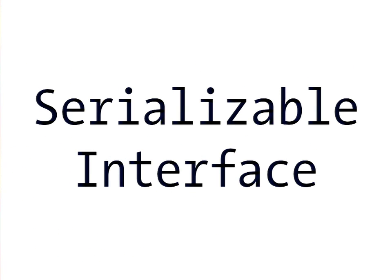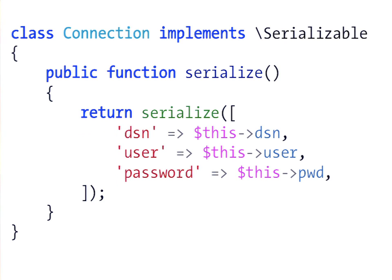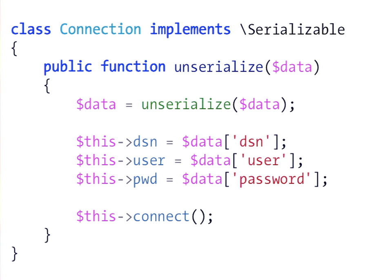Another approach, since PHP 5.3 or 5.4, is the Serializable interface, which replaces __wakeup and __sleep. If your objects implement this interface, you need a serialize method where you return the serialized representation of your object. The unserialize method receives the serialized string, which you can unserialize to retrieve values and repopulate your PHP properties to recreate the object.